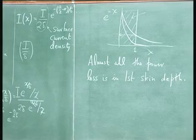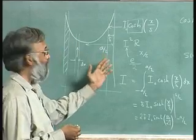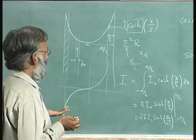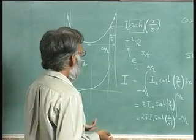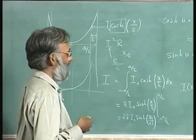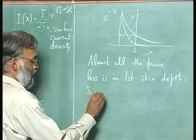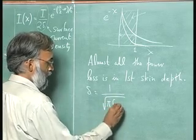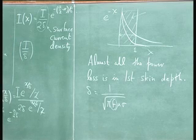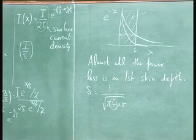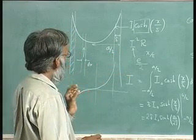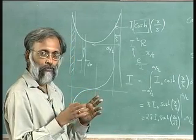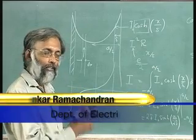This is why skin depth is such an important concept — the current is there, the power dissipation is there, and we need to understand skin depth and how it applies to our problems very carefully. The skin depth in different materials depends on frequency because delta equals 1 over sqrt(pi f mu sigma), so the larger the frequency, the smaller the skin depth. For copper at 60 or 50 Hz, the skin depth is less than 1 centimeter.